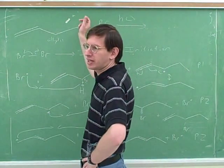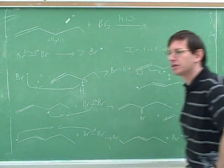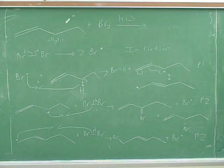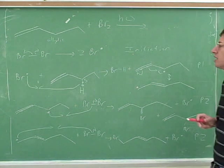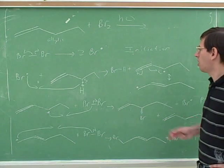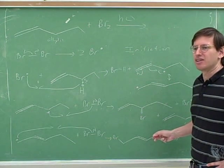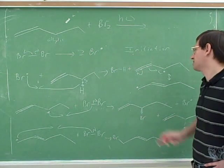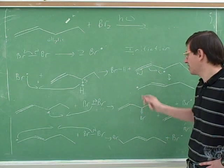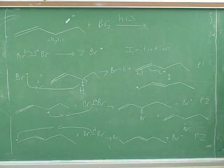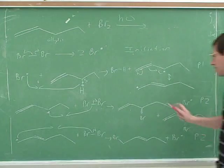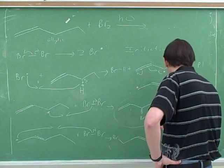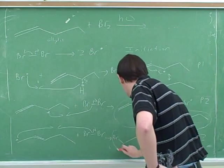How many products did we get total from the allylic halogenation of the starting material? It depends on which structure we want. Right. However, remember that in the actual solution, all of these things are happening. Remember, there's not just one of these molecules, there's billions of them. Some of them, in some cases, this resonance structure will be attacked. And in some cases, this resonance structure will be attacked. So the total number of products would be? Three. That's right. This one. This one. And this one.